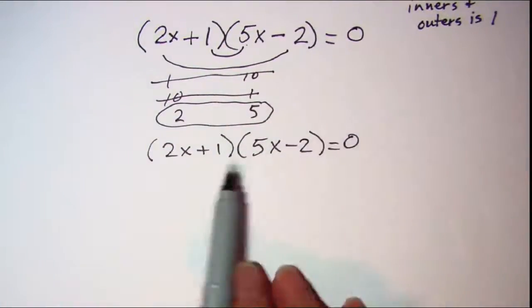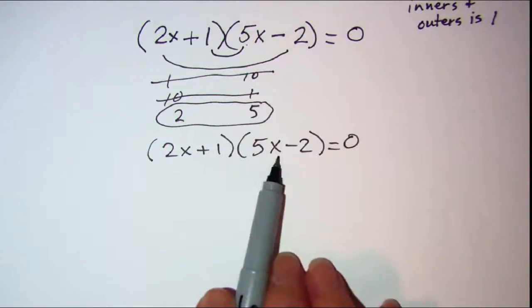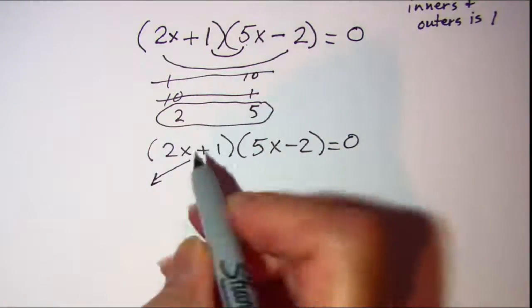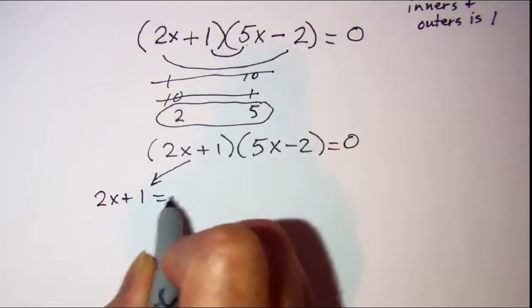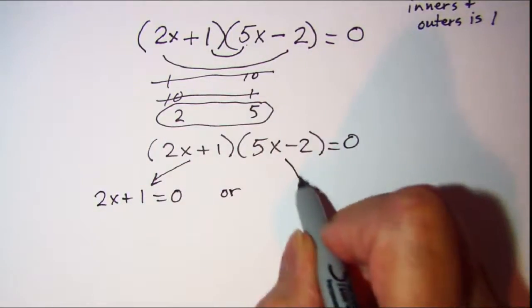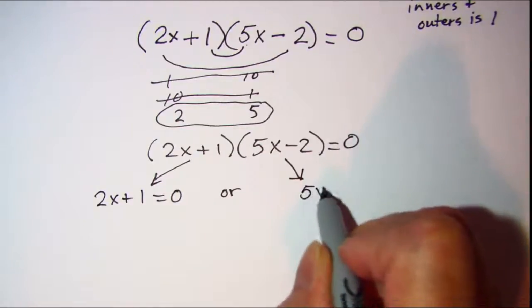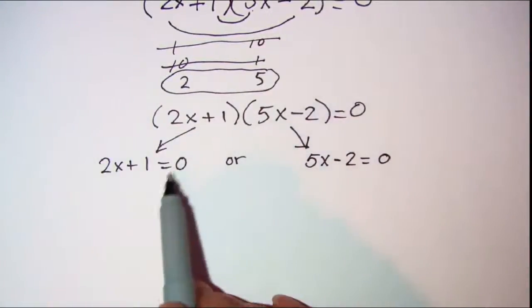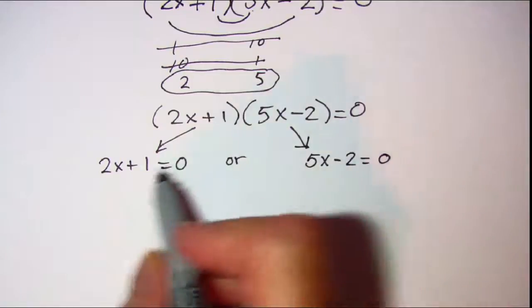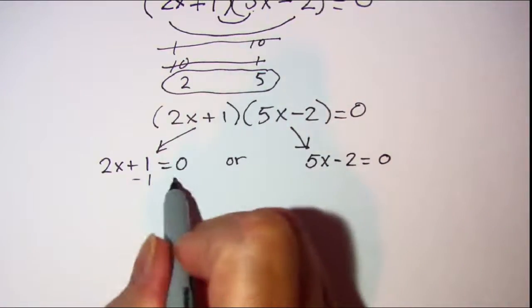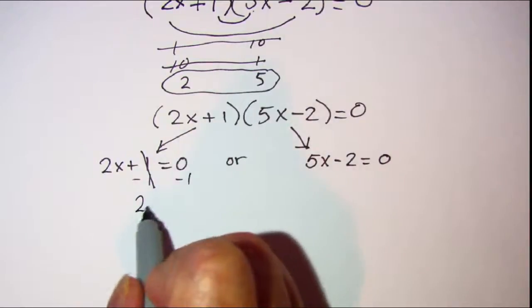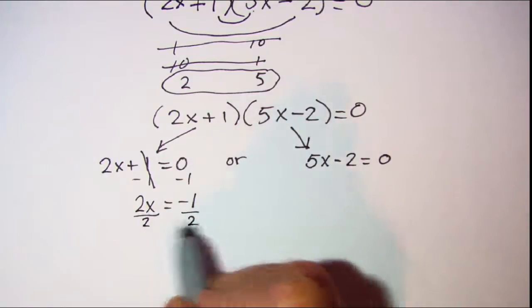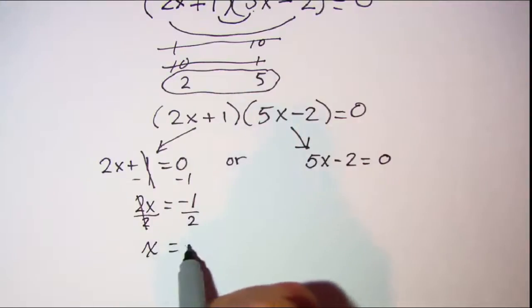The zero factor property says that since two factors multiplied together equal zero, this factor equals zero or this factor equals zero or both. Let's solve each linear equation. For the first: 2x + 1 = 0. Subtract 1 from both sides: 2x equals negative 1. Divide both sides by 2: x equals negative one half.